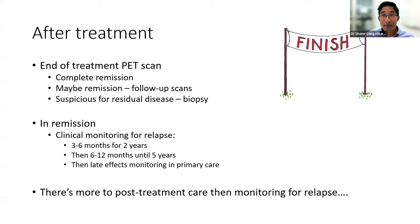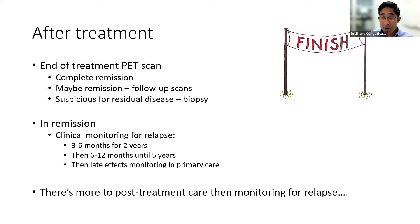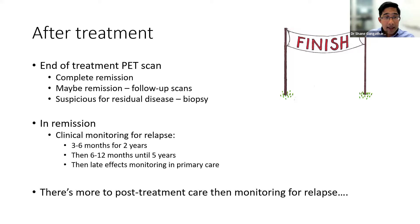A big part of lymphoma management is what happens after treatment — especially for young adults with a lot of life to live. First, we confirm a good PET scan and if there are suspicious areas, we try to biopsy them. Assuming a patient's in remission, we monitor them clinically for relapse — seeing patients every three to six months for two years, asking about enlarged lymph glands and B-type symptoms. After two years, if there's no relapse, it's less likely to occur, so we see them less frequently. At five years, if they haven't relapsed, they can usually be managed by their GP.